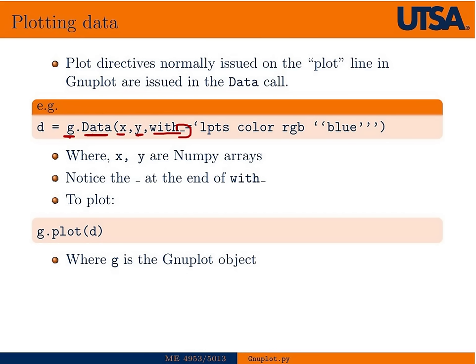...and notice the underscore here. That's important because in Python, 'with' is a keyword. So the underscore is to differentiate it from the Python keyword. So you'd say with, and in this case, lines, points, color RGB blue would produce a blue line.